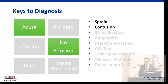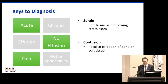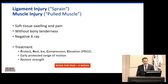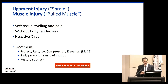So then we think about sprains or contusions — a pretty small list. Where is the pain? If the pain is in the soft tissues following a stress exam, it's a sprain. If it's focal with palpation to the bone, then often a contusion or maybe soft tissue focal not to a ligament. A ligament injury is a sprain; a muscle injury can be a strain. Contusions can be bone, soft tissue, or some combination thereof.